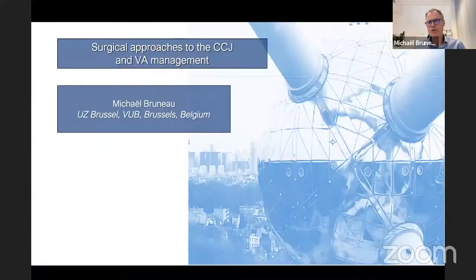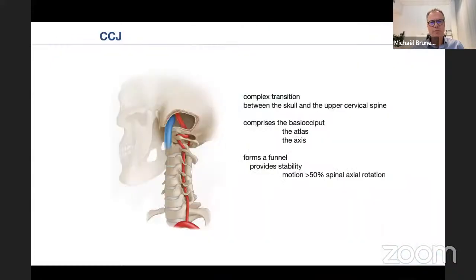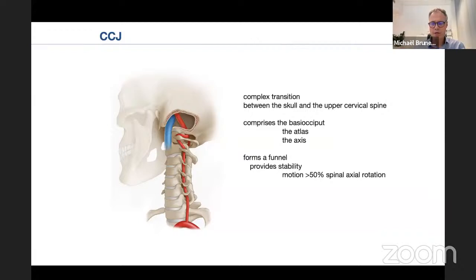I will give the first talk about surgical approaches to this complex region and discuss vertebral artery management. The cranioservical junction is a complex transition between the skull and the upper cervical spine, comprising the basioccipit, the atlas, and the axis. Characteristically, it forms a funnel which provides stability but is also responsible for motion — more than 50% of axial rotation of the head is performed at this level, which is a truly important movement in daily life.